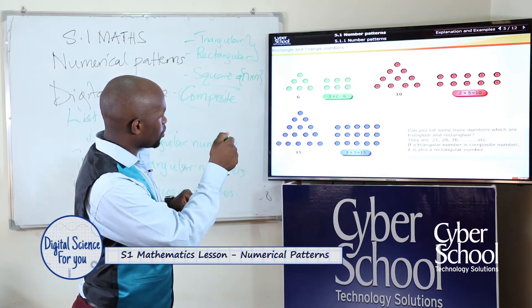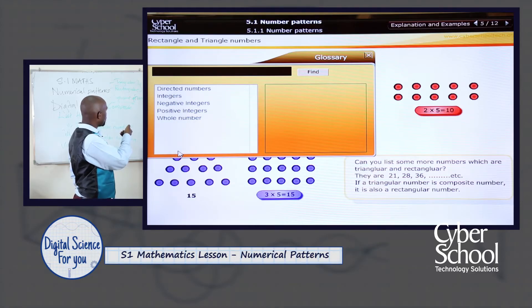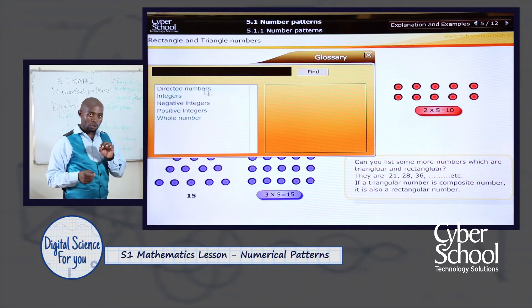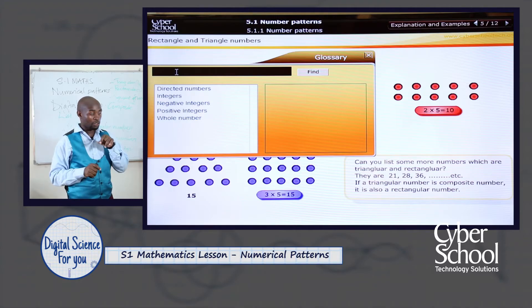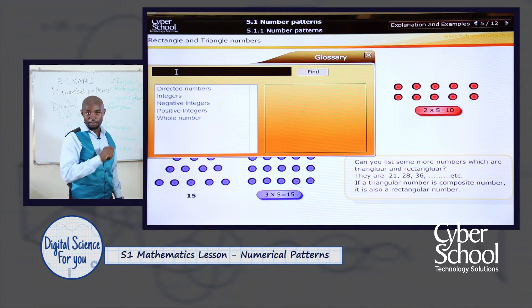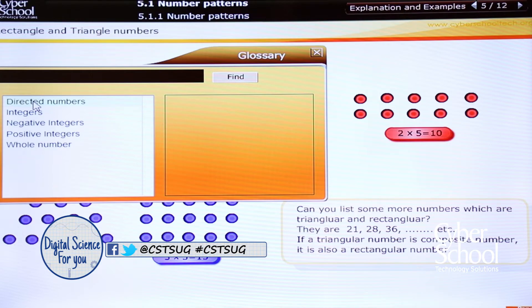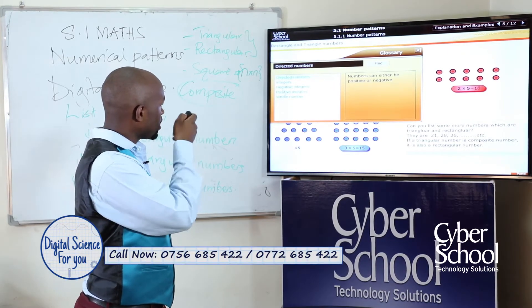Right here, we have a few things that you have looked at so far: directed numbers, integers, negative integers, positive integers, and whole numbers. By the end of our two lessons — this lesson and the next — we should be able to define all these terms. Mathematics: we say there are no words, only numbers, but you have to understand the numbers as well. By the end of the lesson, we shall understand how directed numbers, integers, negative integers, positive integers, and whole numbers come to be.